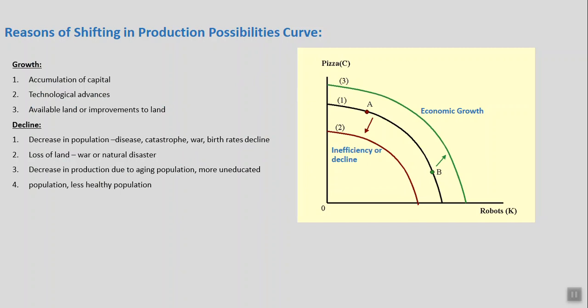On the other hand, factors causing the PPC to decline include: birth rate decline, disease, loss of land or inability to utilize land fully, and a decrease in production due to an aging population or use of unskilled workers who don't produce the expected output. These are the reasons for growth and decline in the production possibilities curve. We will cover the remaining point on PPC in our next lecture. Thank you very much.